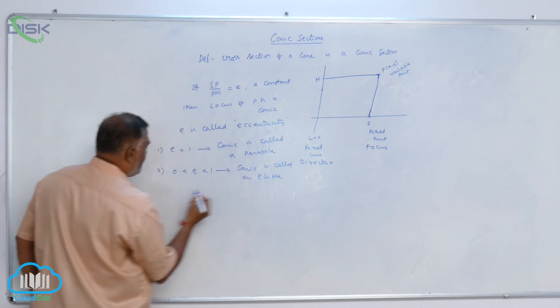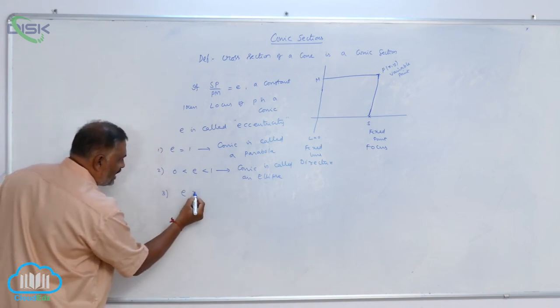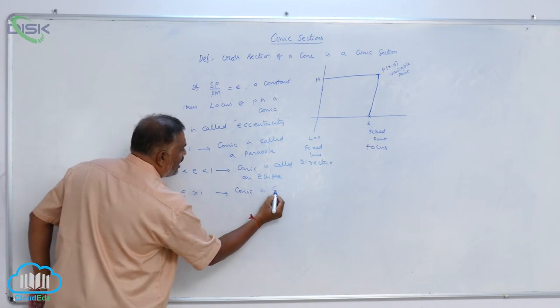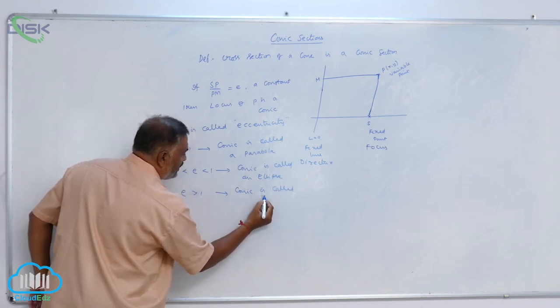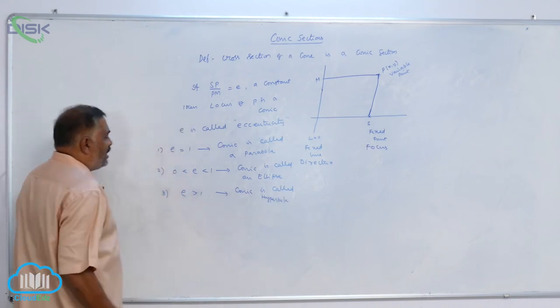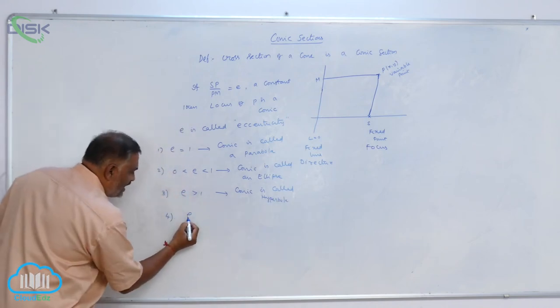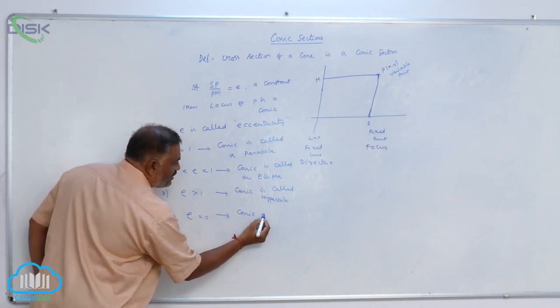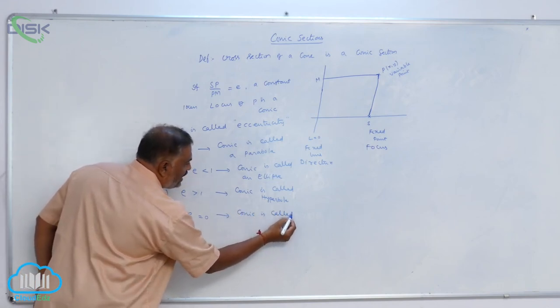Then, number 3, E greater than 1. Conic is called a hyperbola. Fourth one, E is equal to 0. Conic is called a circle.